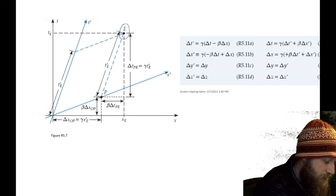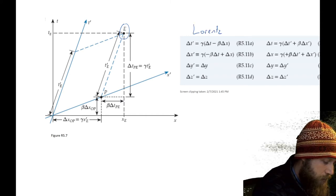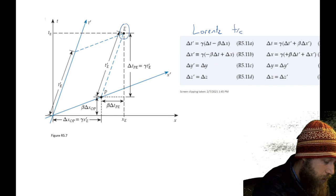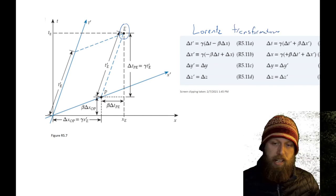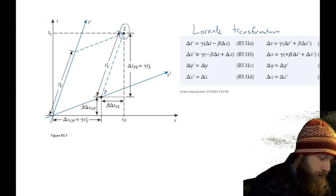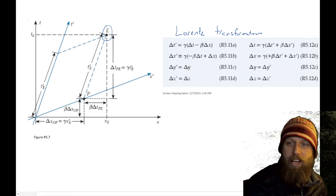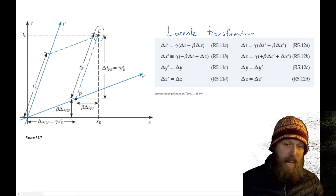What I will just point out is that these are called the Lorentz transformations or the Lorentz transforms. And they're all given in your book. It's right here. It's equations R5.11 through A through D. I'll also point out that there are what are called the inverse Lorentz transforms, which do the same thing going backwards.